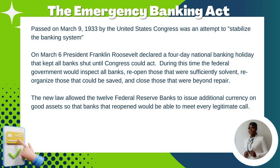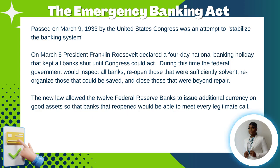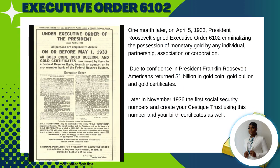During the four-day national holiday, the federal government was supposed to inspect all banks, reopen those that were sufficiently solvent, reorganize those that could not be saved, and close those beyond repair. The Banking Act allowed 12 Federal Reserve banks to issue additional currency on good assets so that banks could be reopened to meet every legitimate call — they needed extra money in rotation.